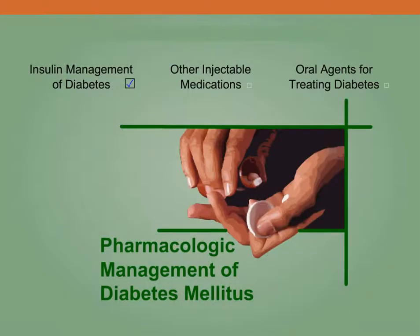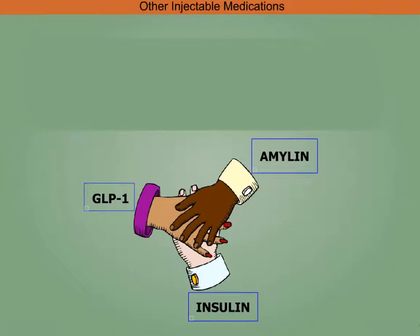Other injectable medications: drugs used to control glucose given by injection that are not insulin. These mimic hormones or are synthetic forms of hormones found in your body. These hormones work with insulin to control your blood sugar. Let's look at each hormone to learn its role in glucose control.